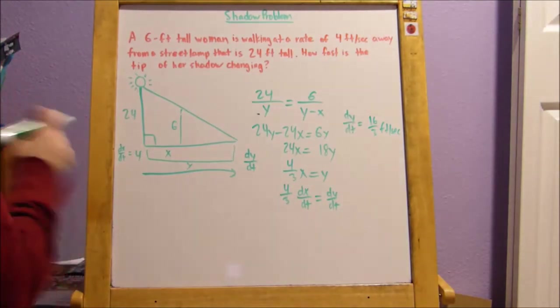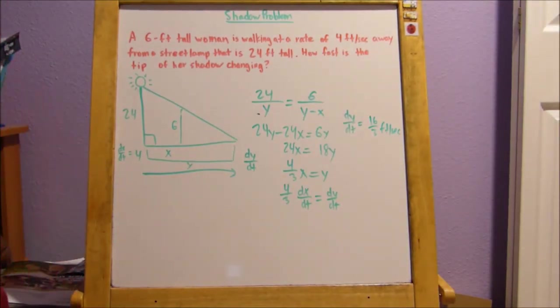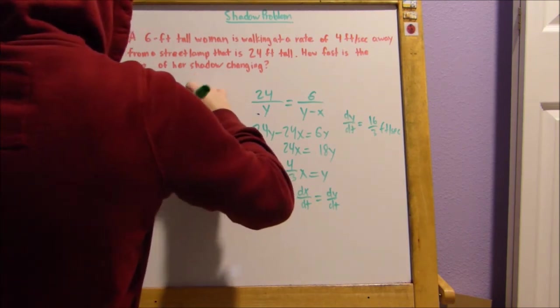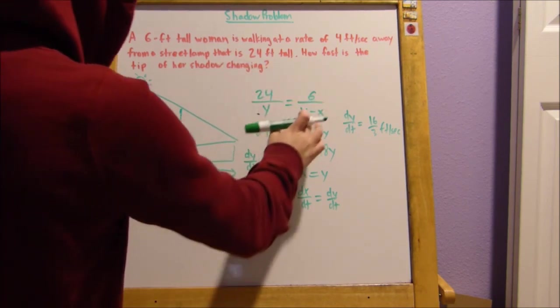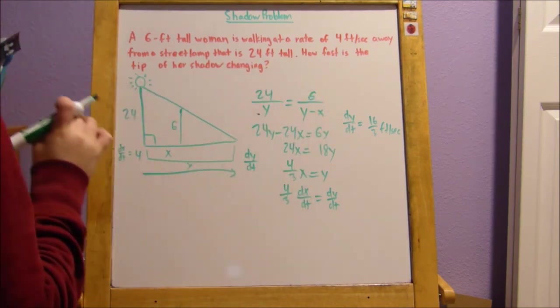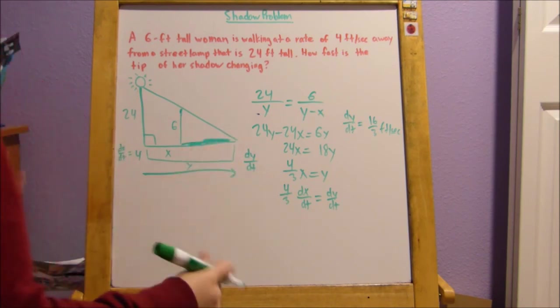And that's how you figure out how fast the tip of her shadow is changing. Notice that when it says tip, what you're going to be doing is you're going to be setting up a ratio with subtraction. When it says length, like in the last problem, you're going to be doing addition.